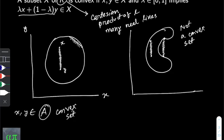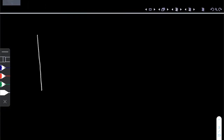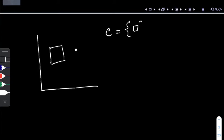One more example: let's say we have a set C which is the union of a square and a separate isolated dot. If I take any points within the square, the lines connecting those points will be contained within the set. But if I connect any point on the square with the isolated dot, not all points on that connecting line are contained within the set. So this is not a convex set.